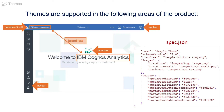Themes are supported in the following areas of the product. You can change the brand icon small, aspects of the app bar, the brand text, the brand icon, and aspects of the nav bar. And on the side, here is the file spec.json for the sample theme supplied.